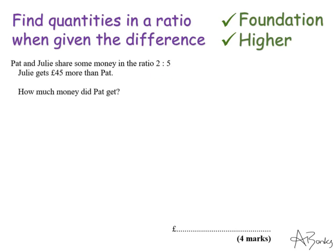So we have 2 to 5, 4 to 10, 6 to 15, and so on, and then wait until we get to numbers where Julie would get £45 more than Pat. But it could be a really large number, so we need a quick way of finding the answer rather than this trial and error method.